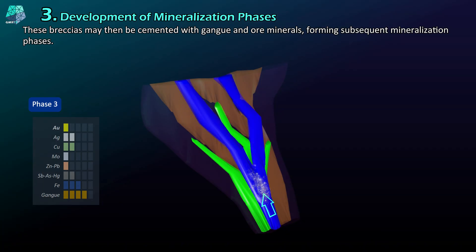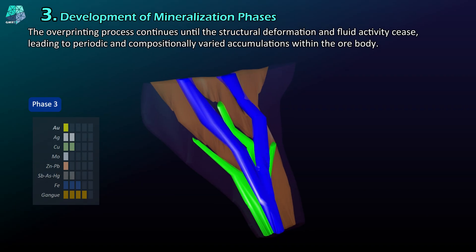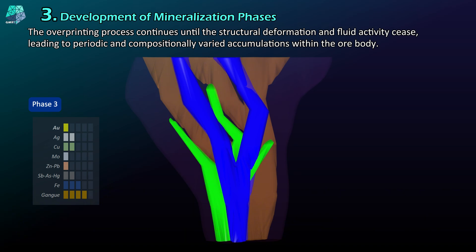The overprinting process continues until the structural deformation and fluid activity cease, leading to periodic and compositionally varied accumulations within the ore body.